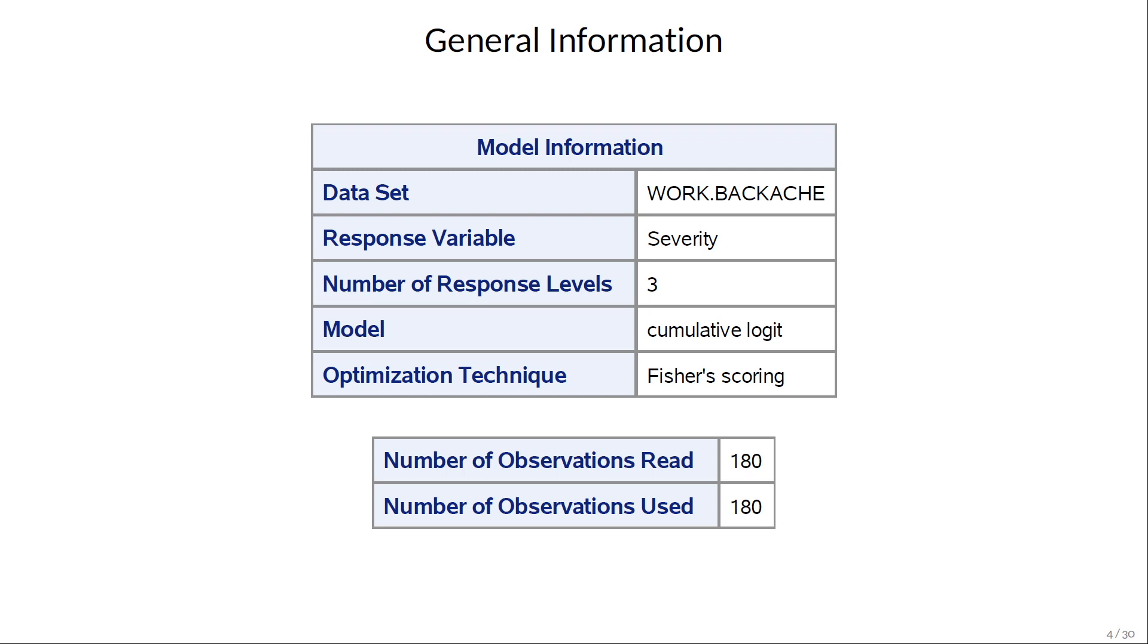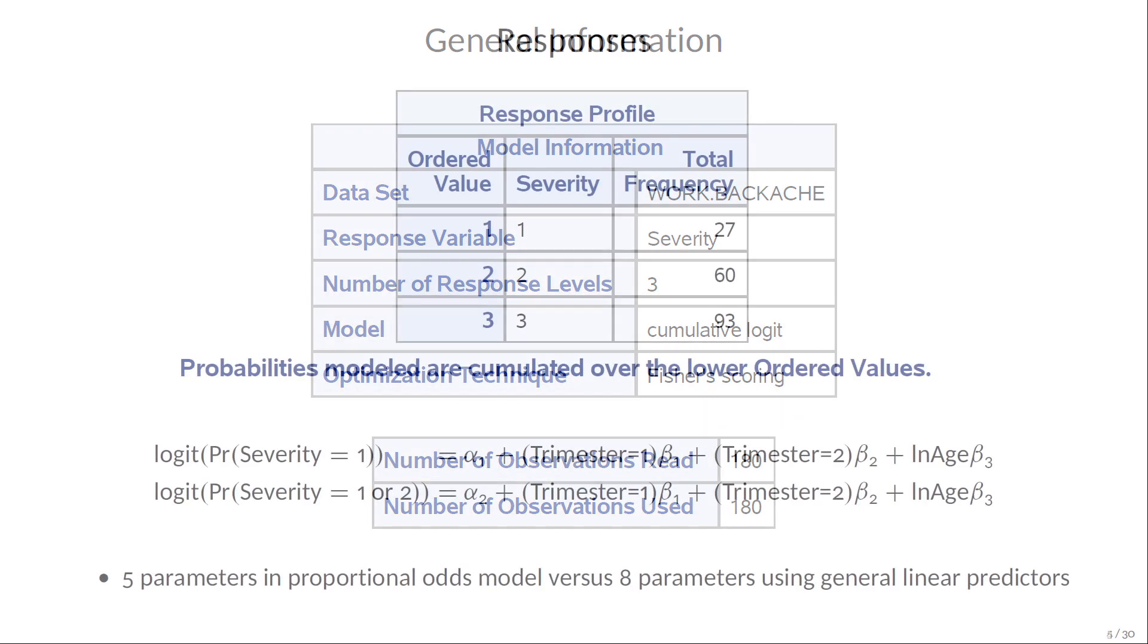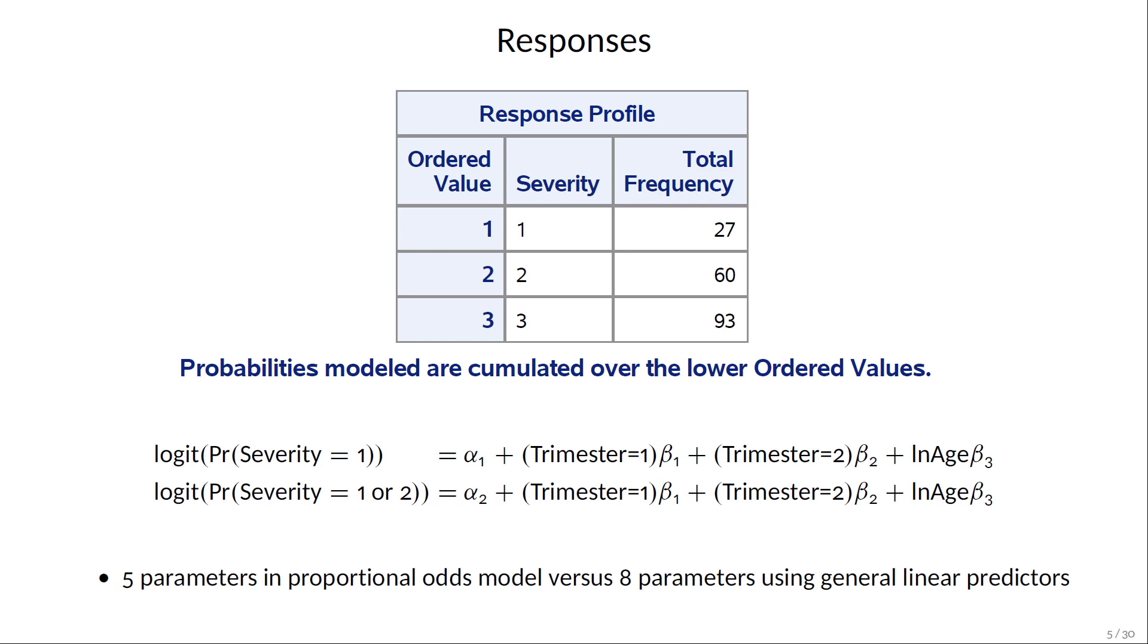Now we'll look at PROC LOGISTIC's output. The first tables let you verify that you're fitting what you think you are. We have three response levels and are using cumulative logits. And the note below the response profile table means you have cumulative logits. You can see we have five parameters, two intercepts, alpha1 and alpha2, and the three slopes,